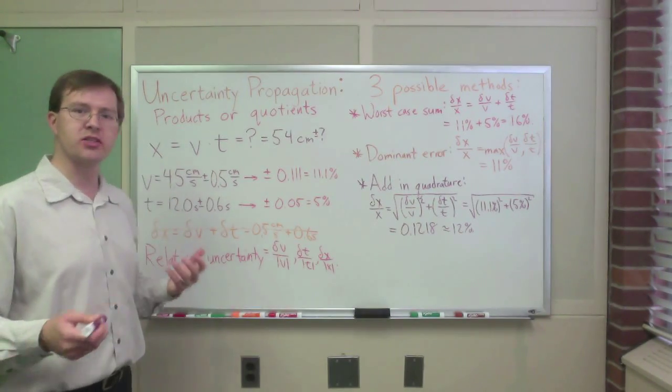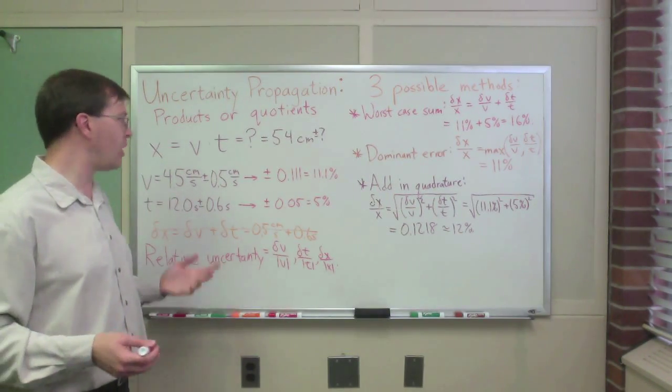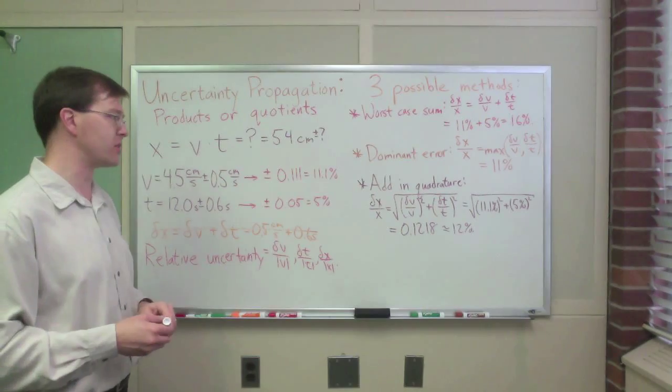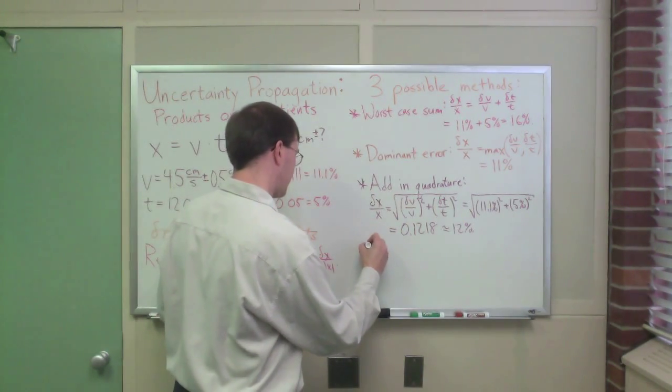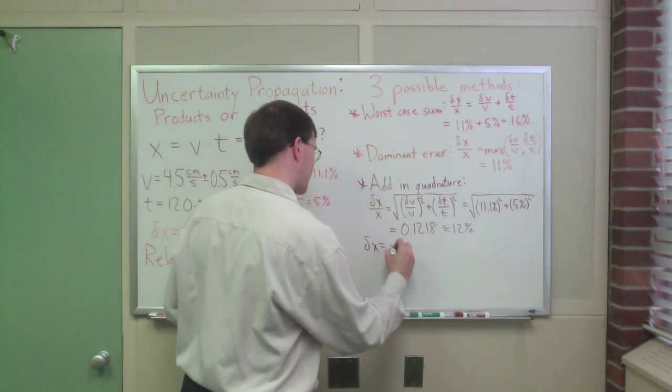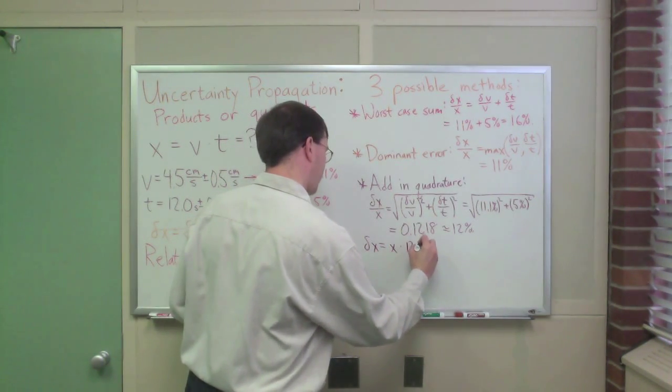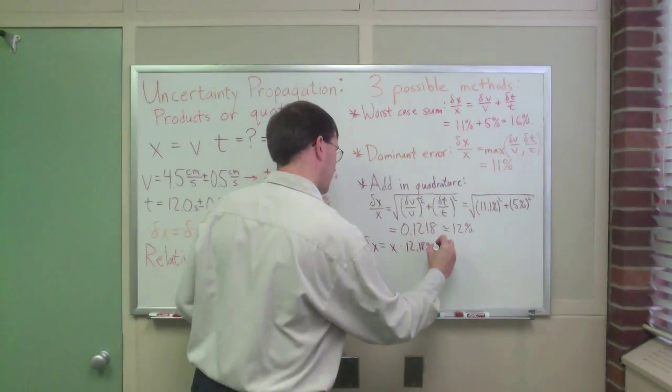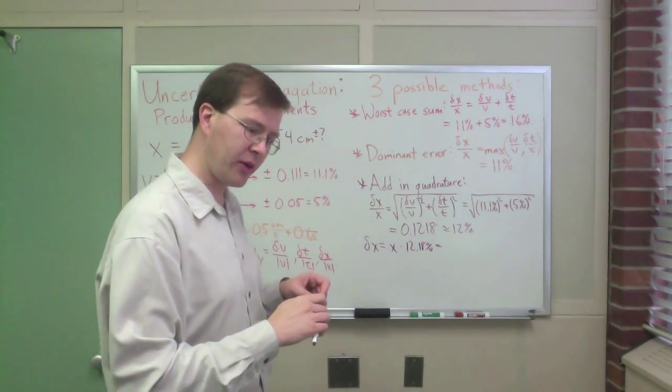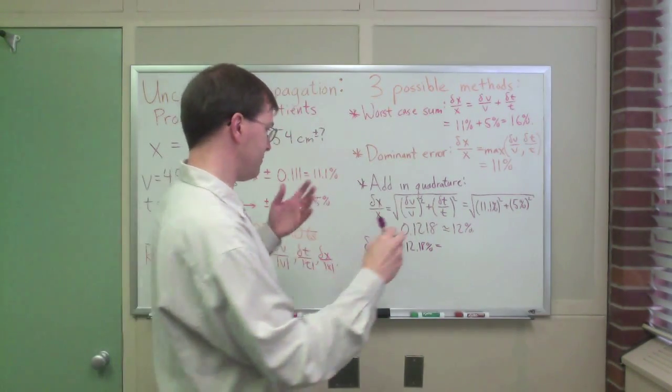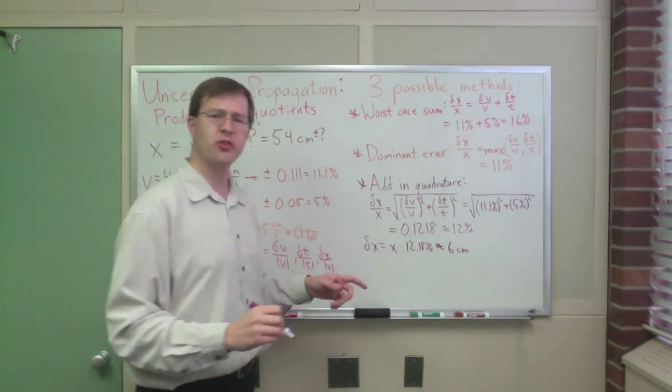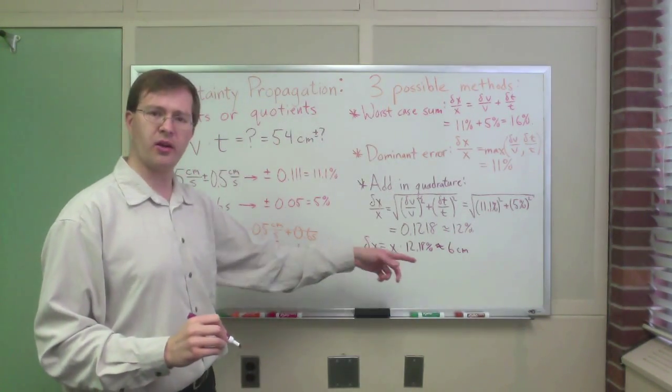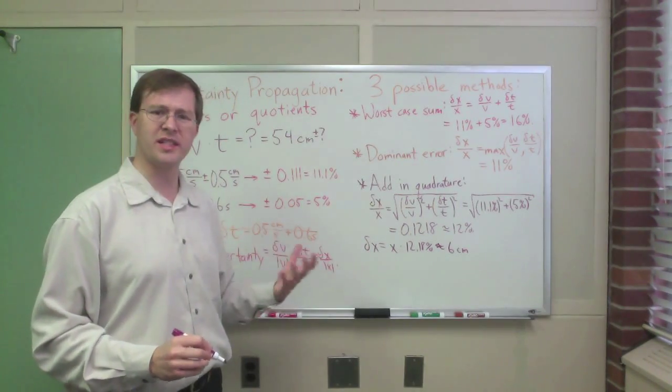So, what is my absolute uncertainty in x? I really want to know, how much do I trust this 54 cm? Well, at this point I can just solve, delta x itself equals x times 12.18%, and when I multiply that out, I get, basically, approximately 6 cm. Remember, I usually round absolute error off to one significant figure.